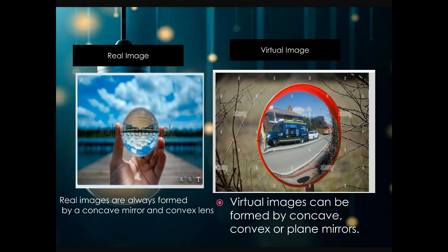The second difference between real image and virtual image is that real images are formed by a concave mirror and a convex lens. Remember it is concave mirror and convex lens. Virtual images can be formed by concave, convex, or plane mirrors.